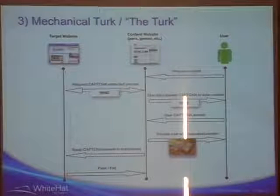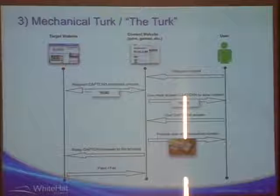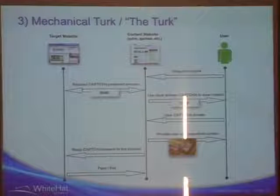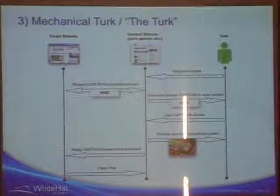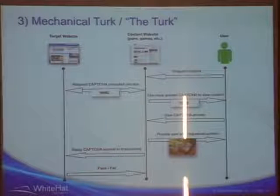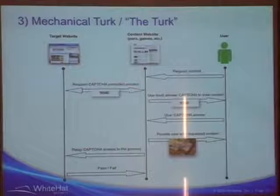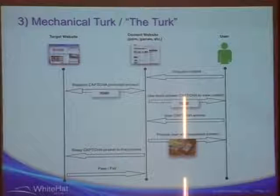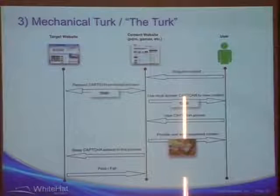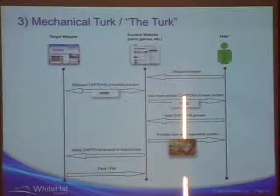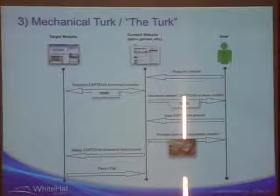Third is my personal favorite: the Mechanical Turk, or the 'meat cloud.' Since there's sought-after content — MP3s, adult entertainment, online games — you create a popular website offering free content, and when users visit you say: I'll give it to you for free, provided you fill out this CAPTCHA. The CAPTCHA actually comes from the target website. You grab the CAPTCHA from Yahoo Mail, deliver it to your user, they fill it out, and you proxy the answer back. As long as you have enough visitors, you can automate this process. No one has a really good solution for this method and it's highly effective.